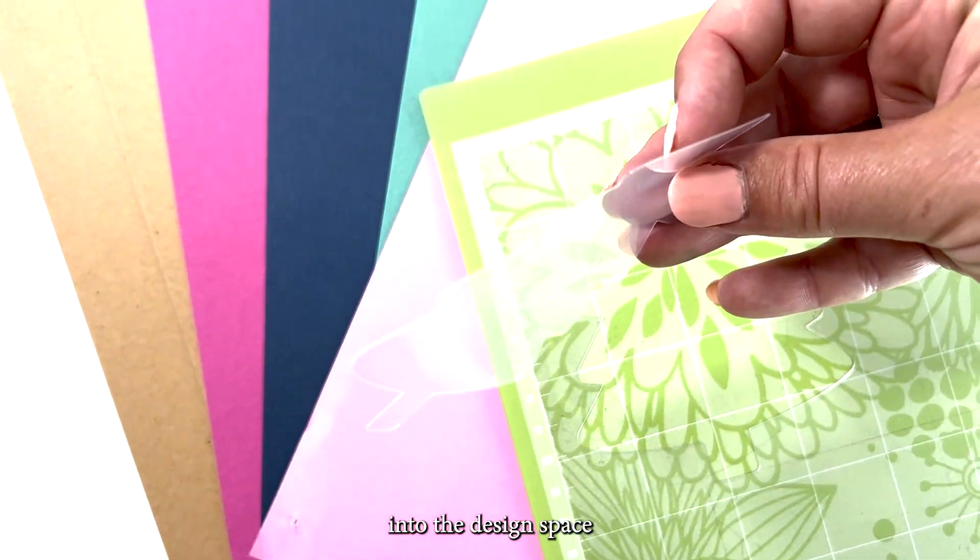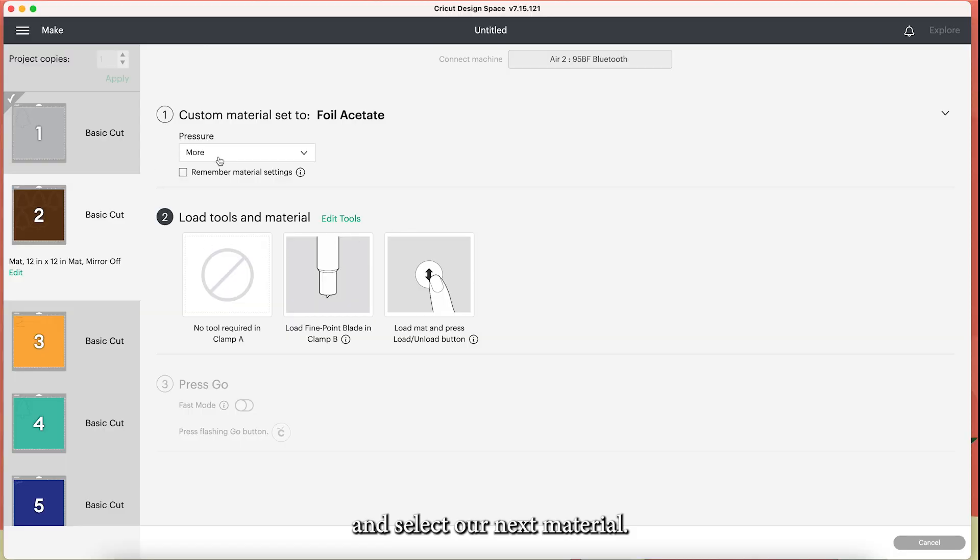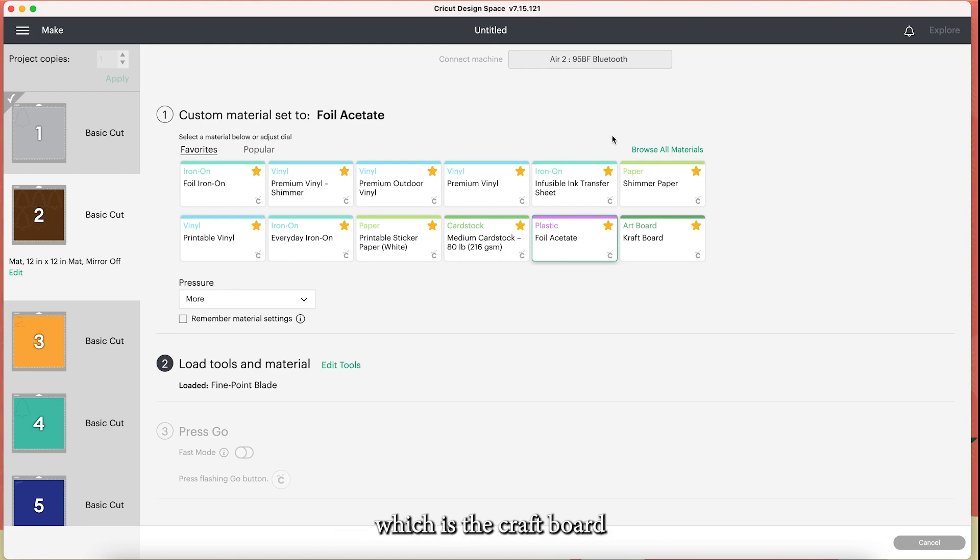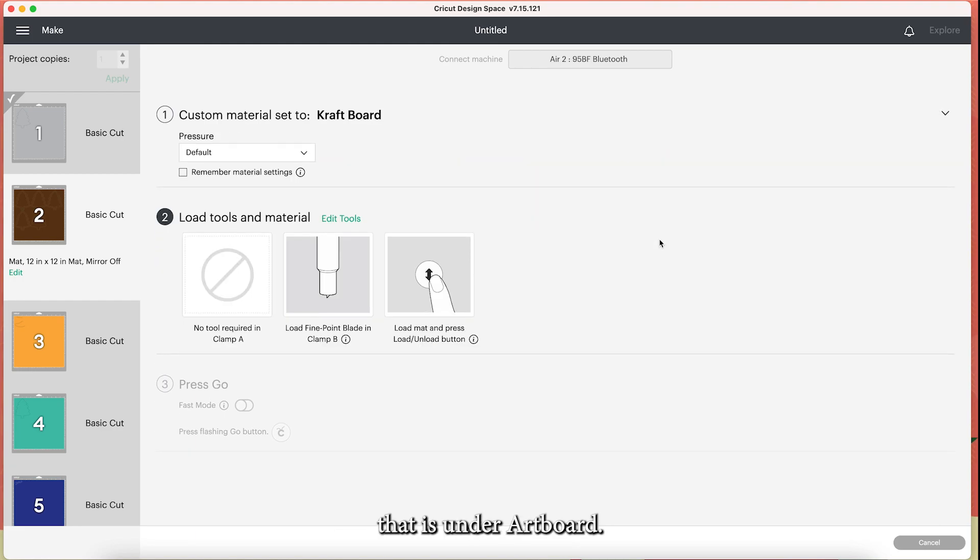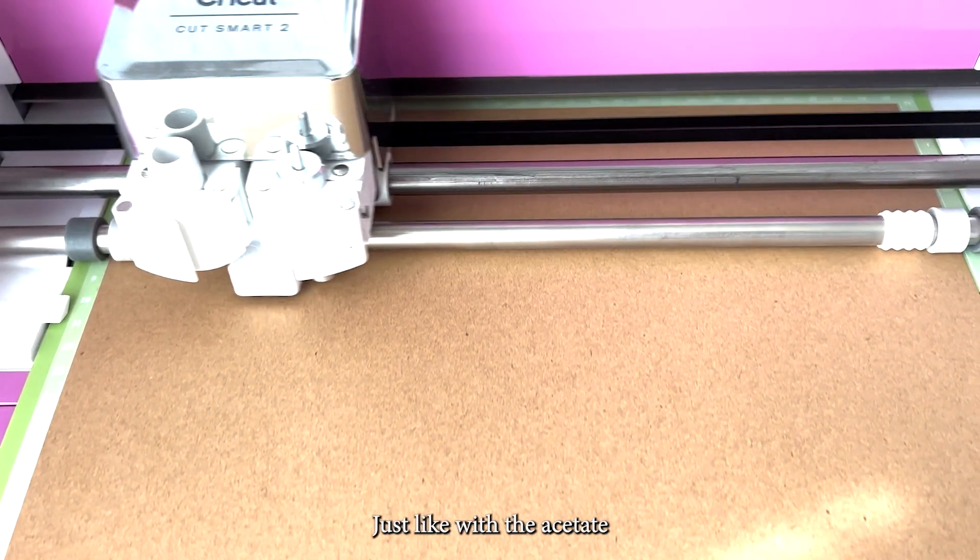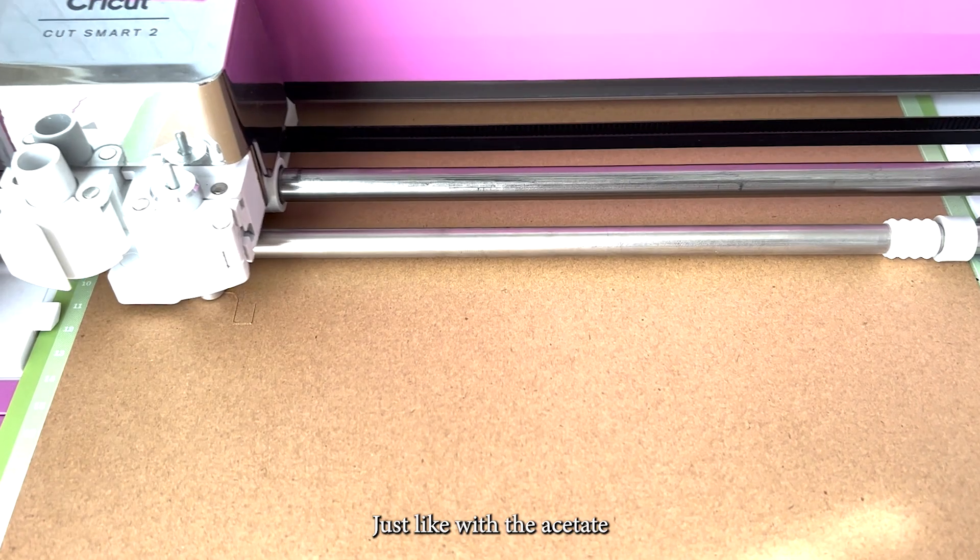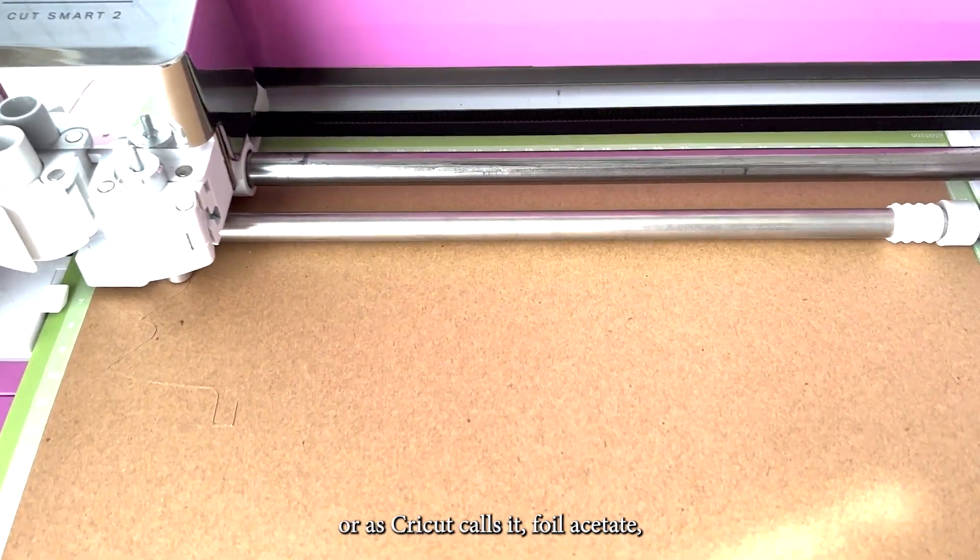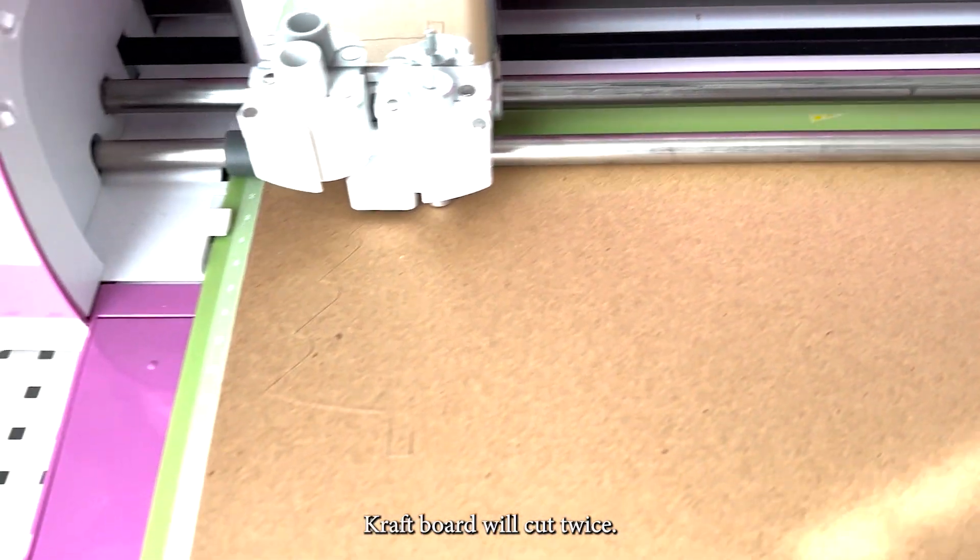Automatically it goes to the brown, which is the craft board that is under art board. It's a little thicker than craft paper. Again, I'm going to select more and we're going to run through all of these materials so that you can see exactly which material I select. Just like with the acetate or as Cricut calls it foil acetate, craft board will cut twice.